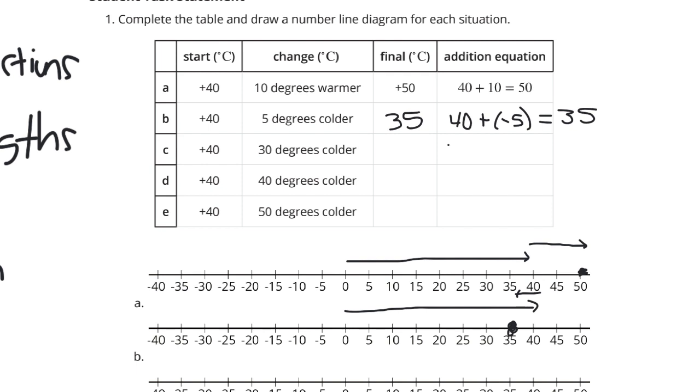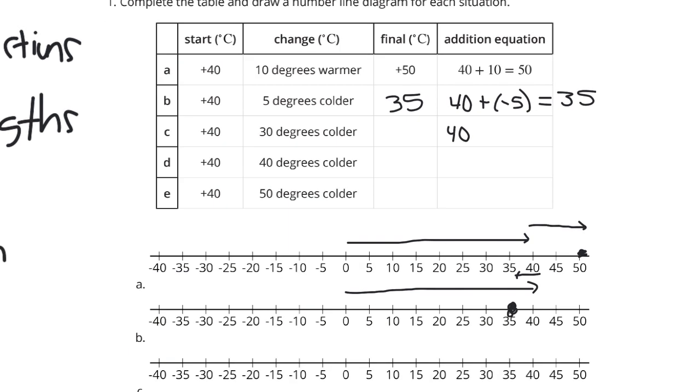Starting at 40 and getting 30 degrees colder. We're going now up to 40. And getting 30 degrees colder is going to end us up at 10. So, 40 plus negative 30 is equal to 10. Our answer is 10. And again, this is a positive 35 and a positive 10 so far for our solutions.